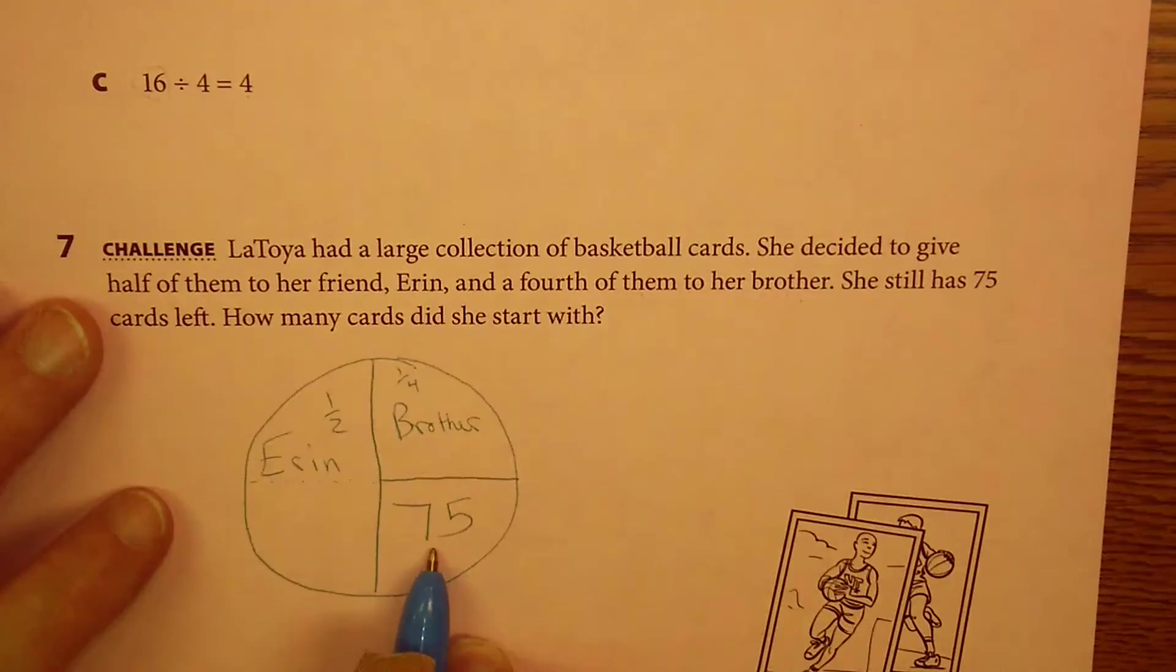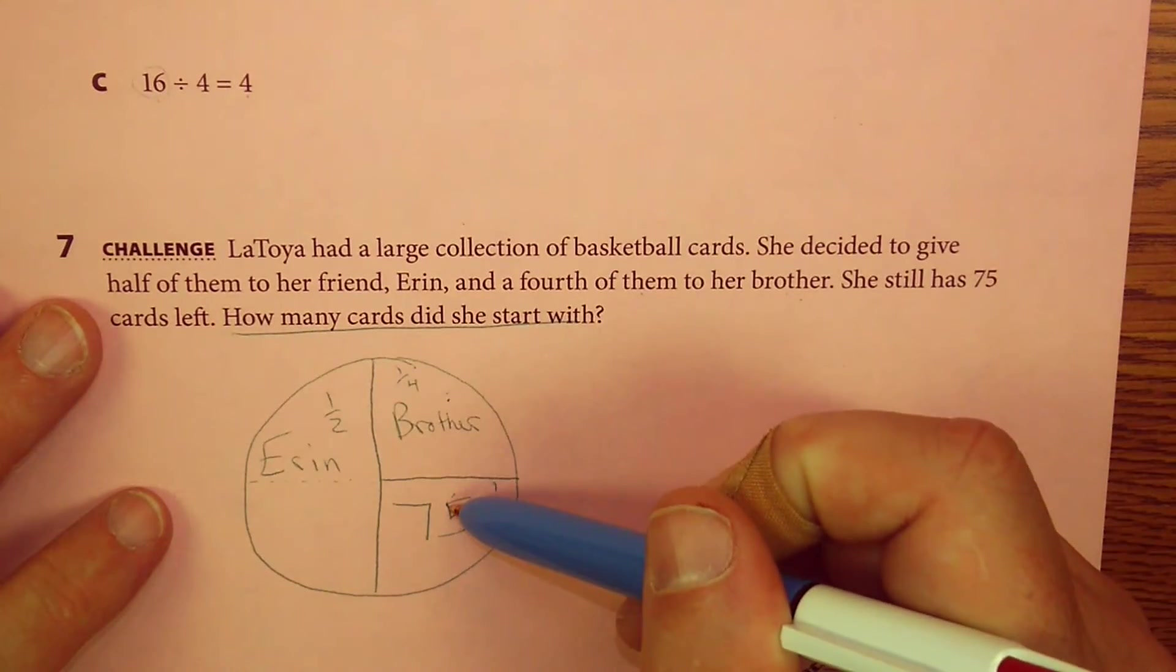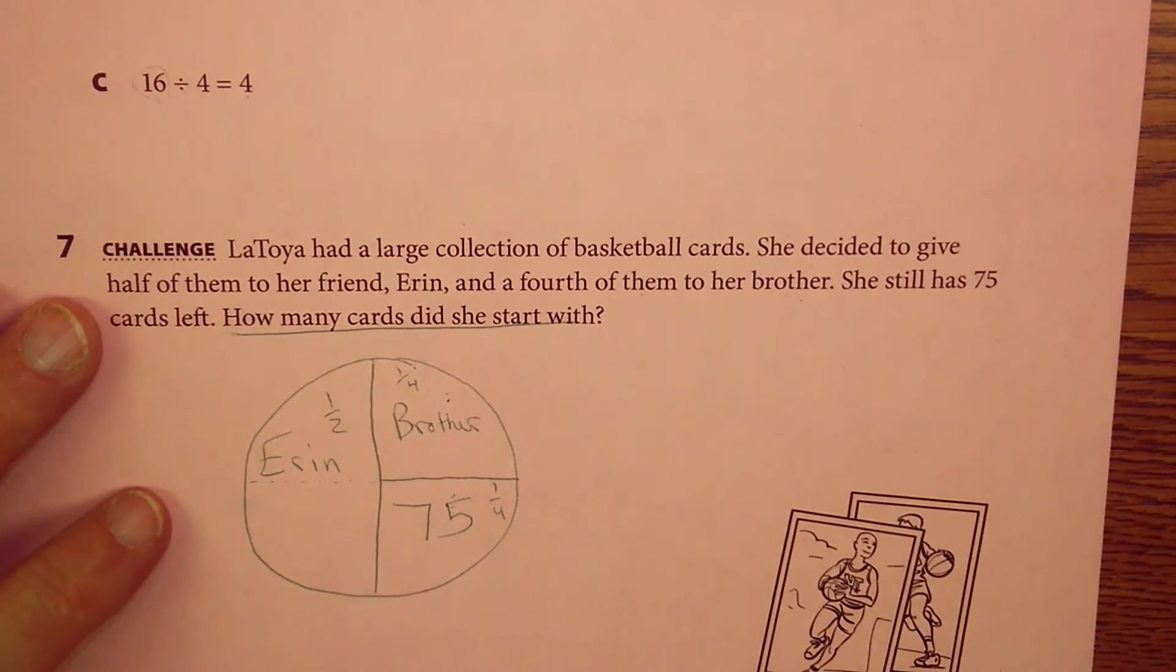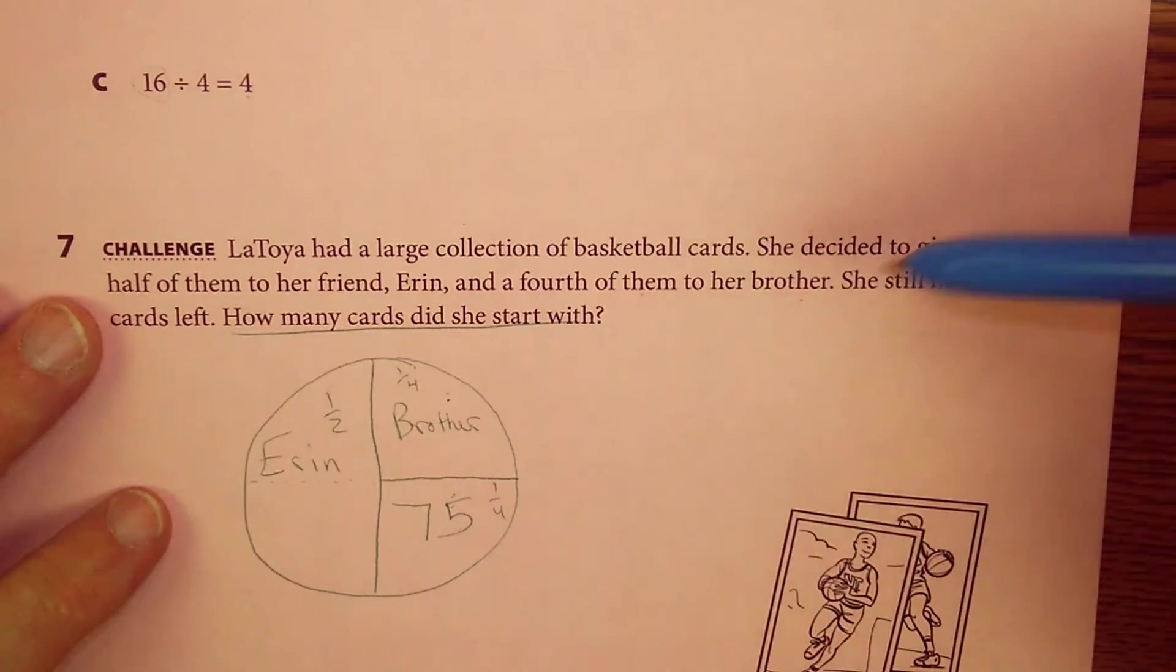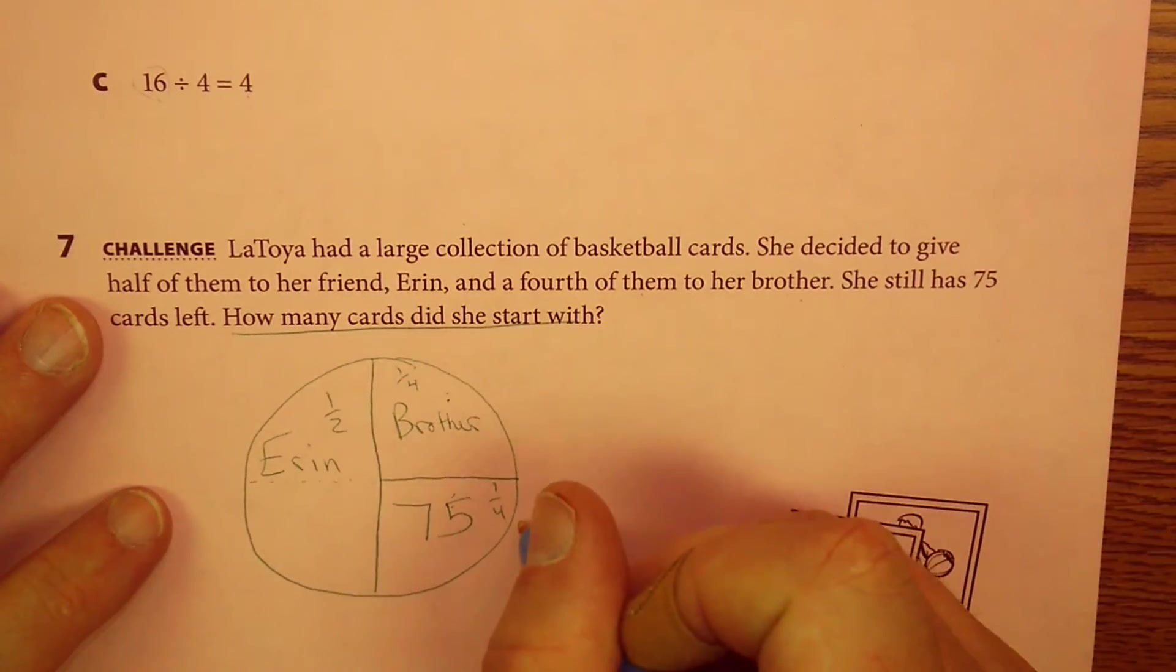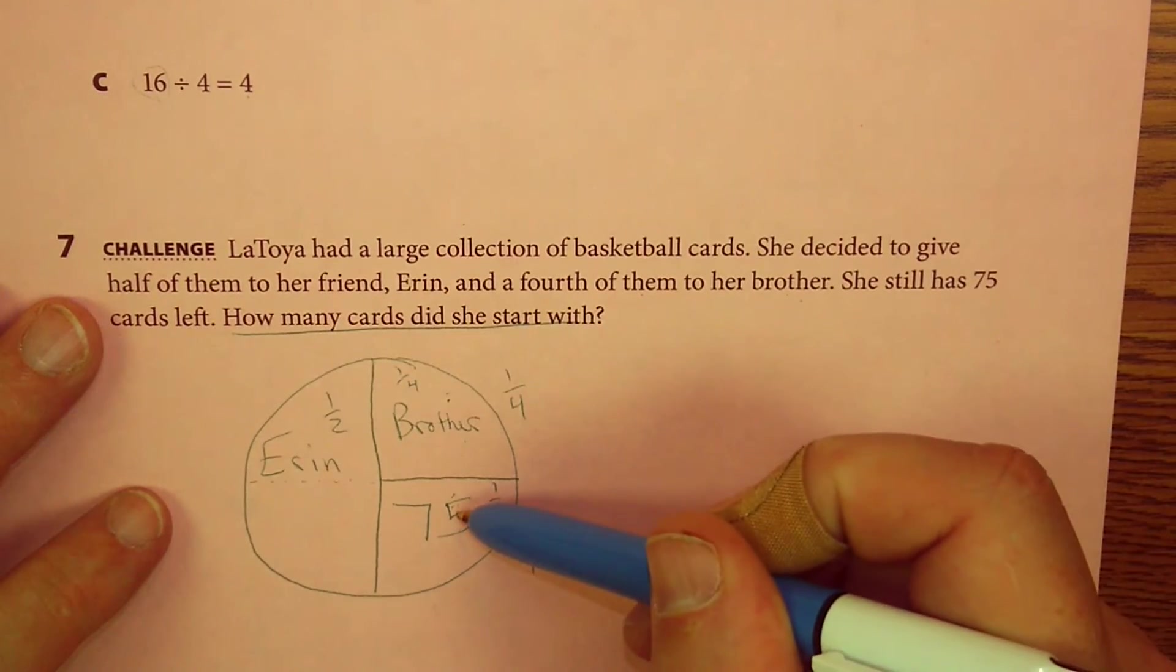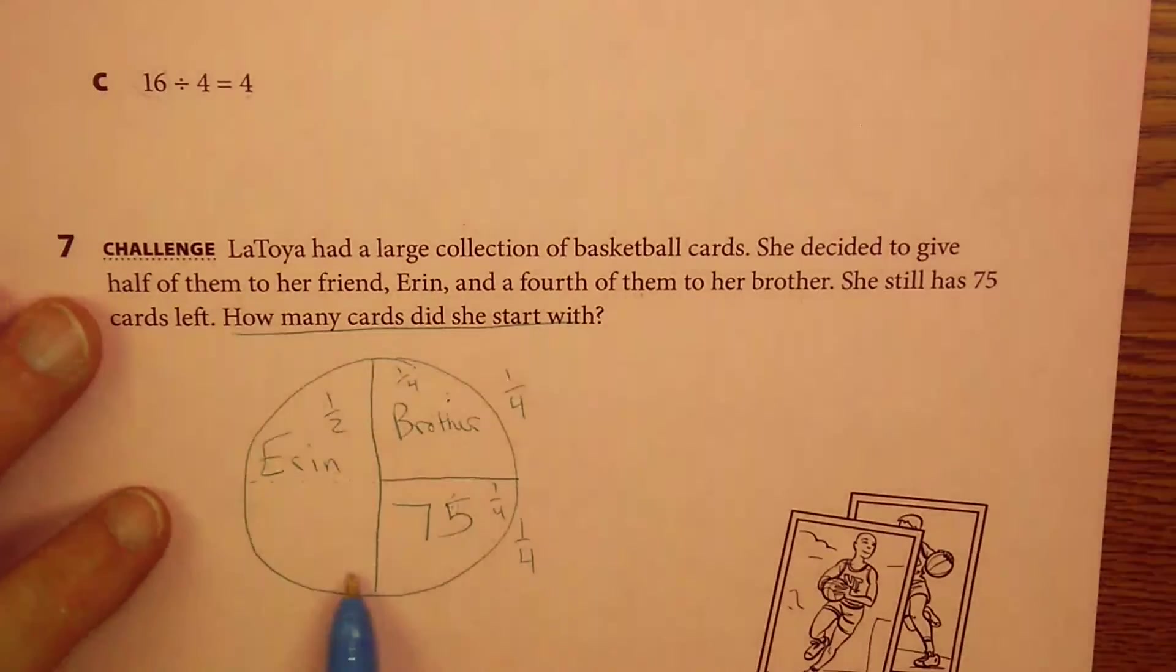So, this is how many cards Aaron has. So, we're trying to figure out how many cards did she start with. Well, this is a fourth, and this is a fourth. So, these two numbers have to be the same. And I'm going to let this challenge be a little bit more challenging by not telling you how it ends. And hopefully, you can go to your teacher, and you can impress them with your knowledge. But if this is a fourth, and this is a fourth, then both of these numbers are going to be the same. Now, what is a half going to be if this is 75, and this is 75?